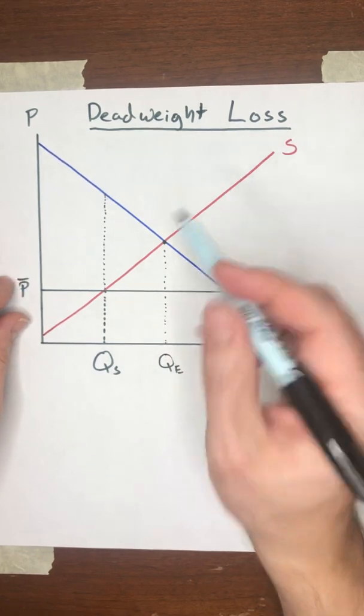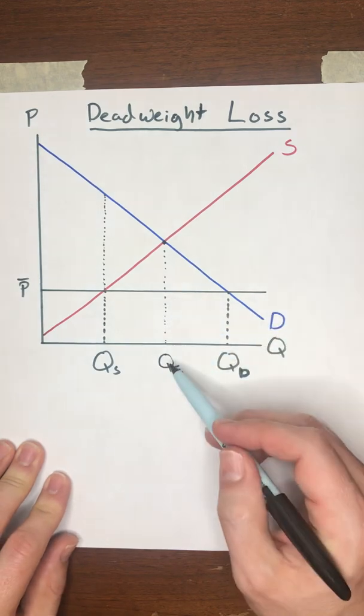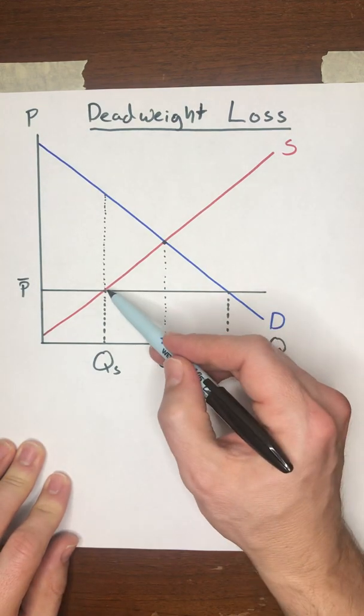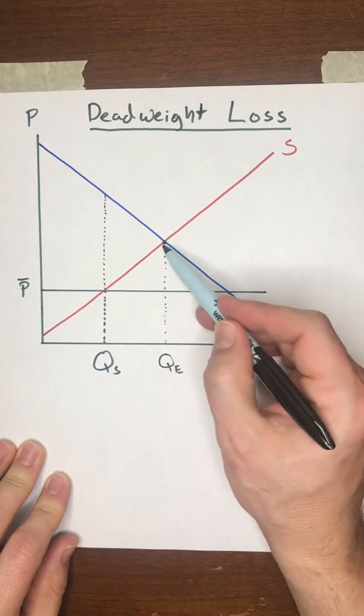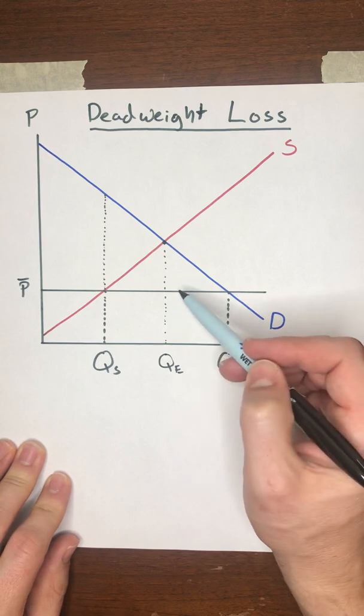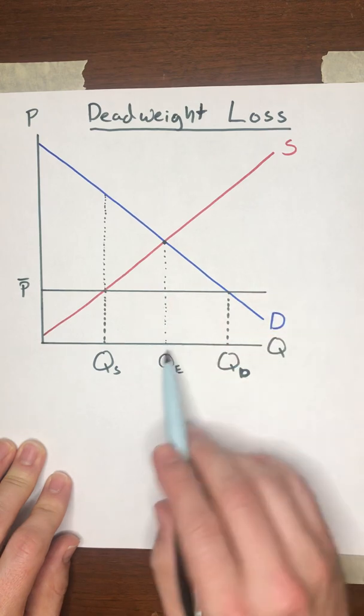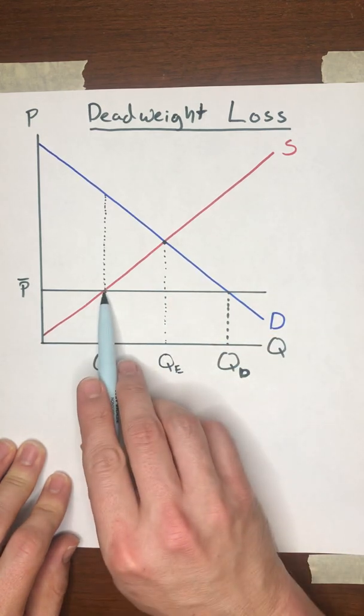What happens when there's a price control like this price ceiling? Well, the sellers are not going to be willing to supply QE units. They won't make all those sales because on every trade from QS to QE, the cost of producing the good is greater than the price they can sell it for. So they would lose money. And in order to avoid losing money on those transactions, they're just going to stop producing here at QS.